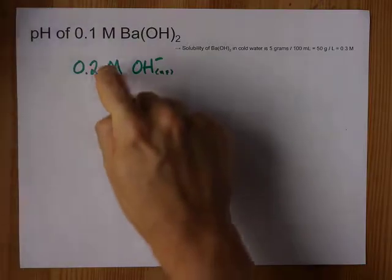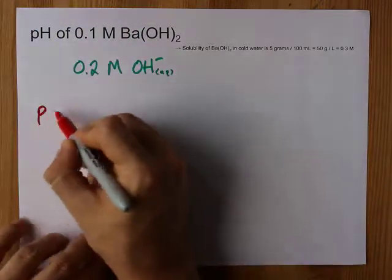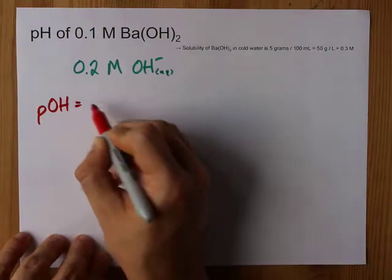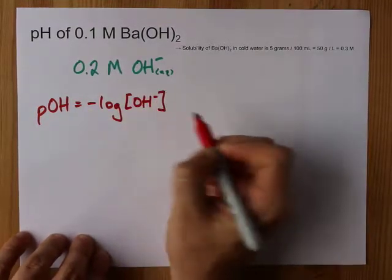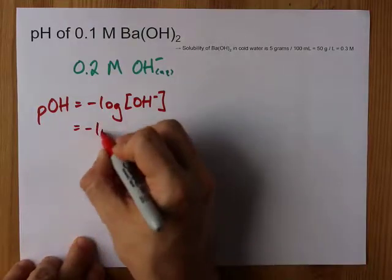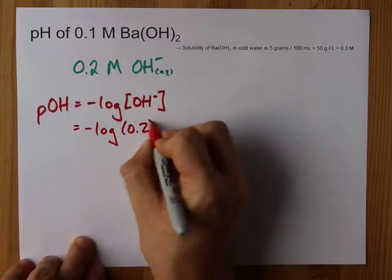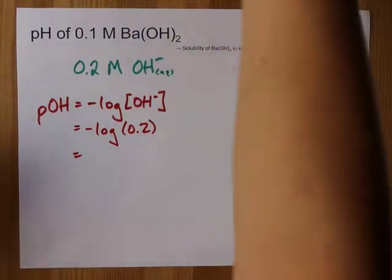Alright, now how do you get that into pH? Well, one option is to remember that there's something called pOH, which is the negative log of the OH- concentration in moles per liter. That is the negative log of 0.2, which if you don't know it, you can go to your trusty calculator.